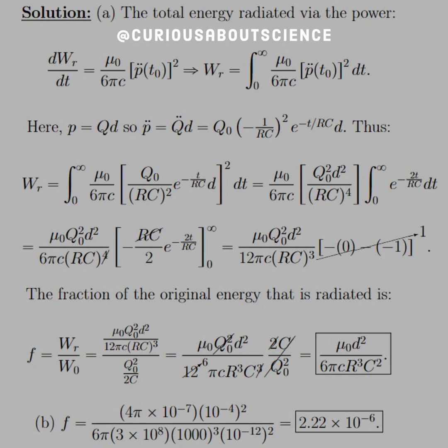We know that the physical dipole is QD, and Q is a function of time, so the double derivative of p is just the double derivative of Q. We get Q0 times negative 1 over RC squared, e to the negative t divided by RC times D. That's where the time dependency comes in.